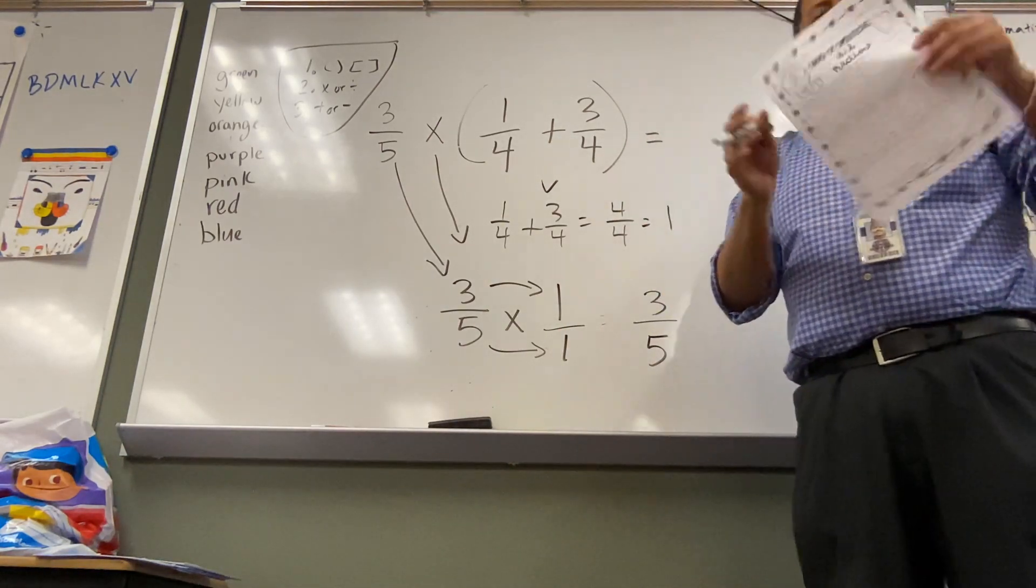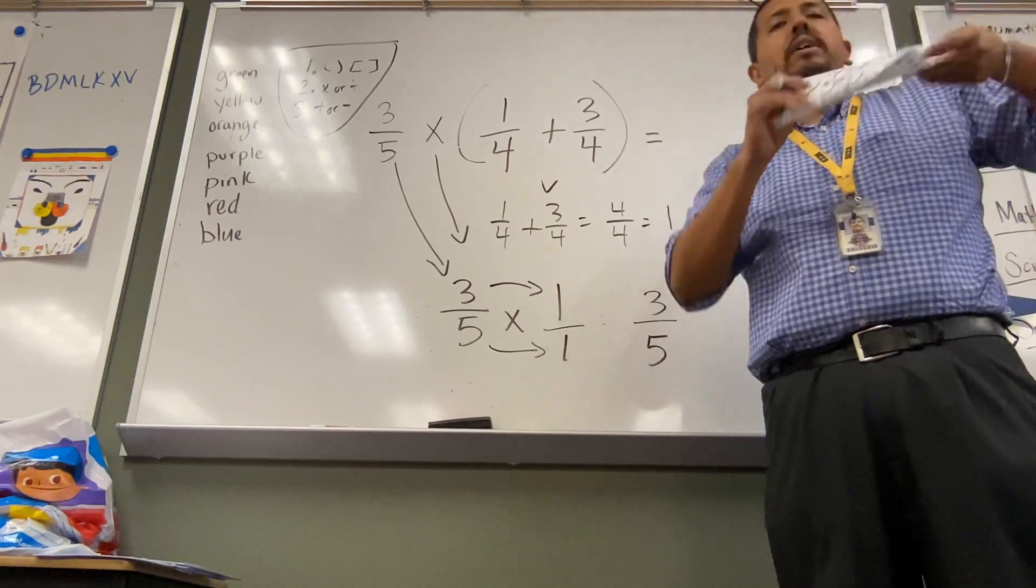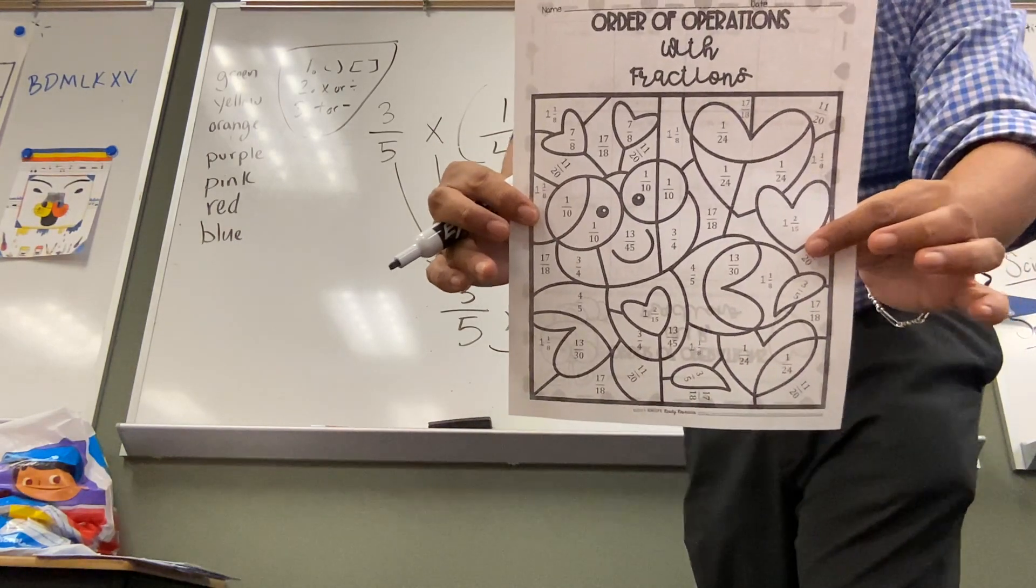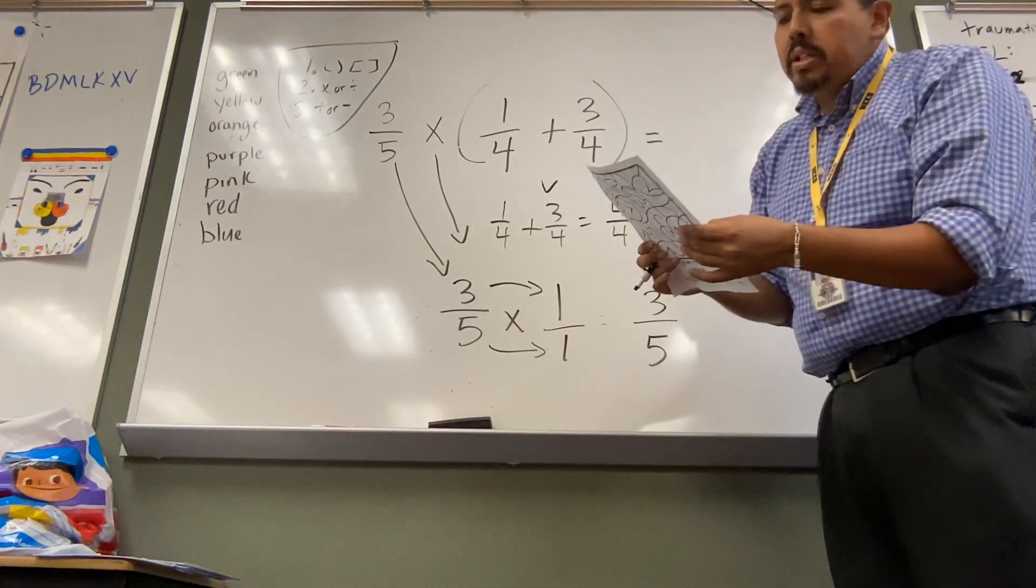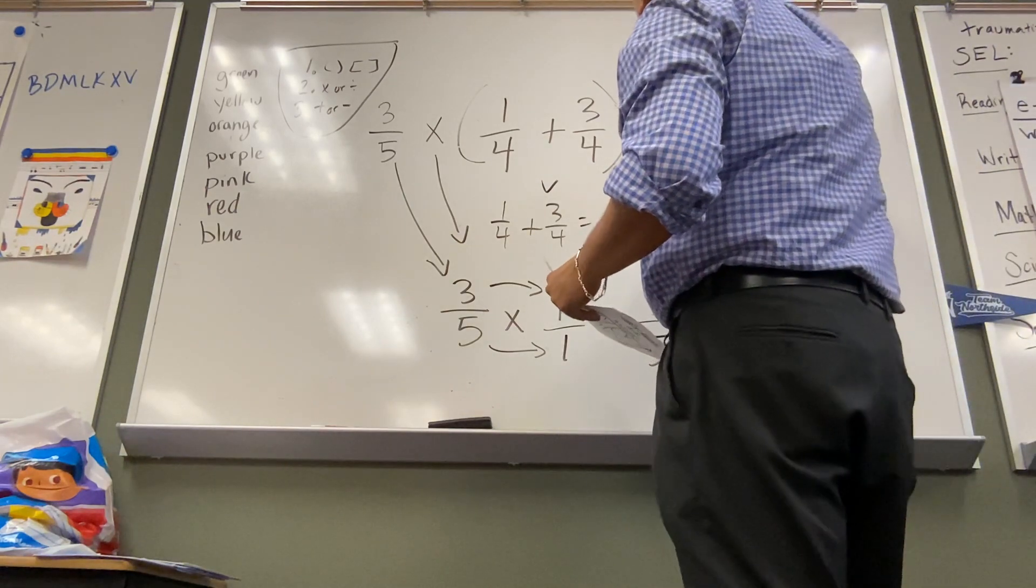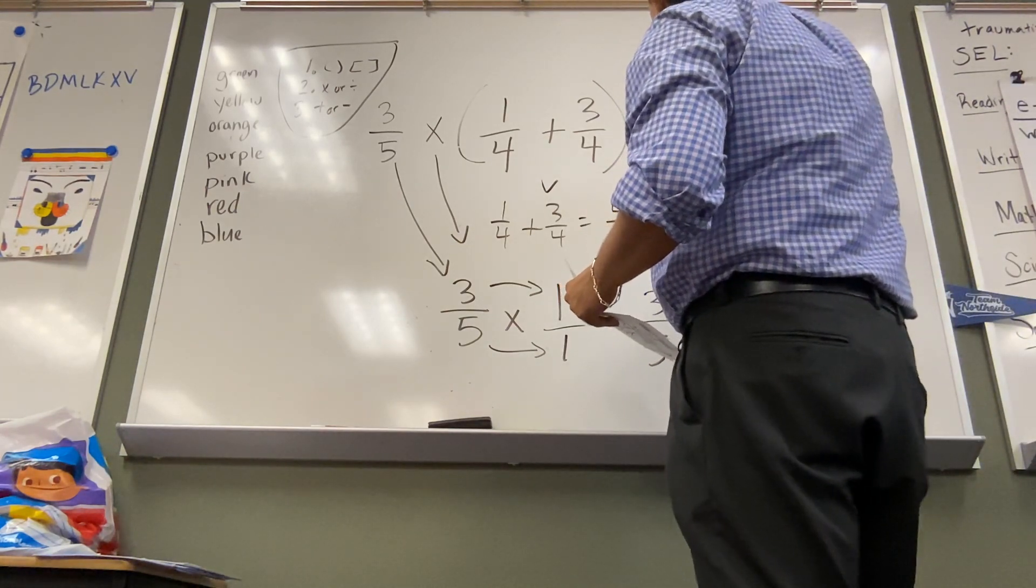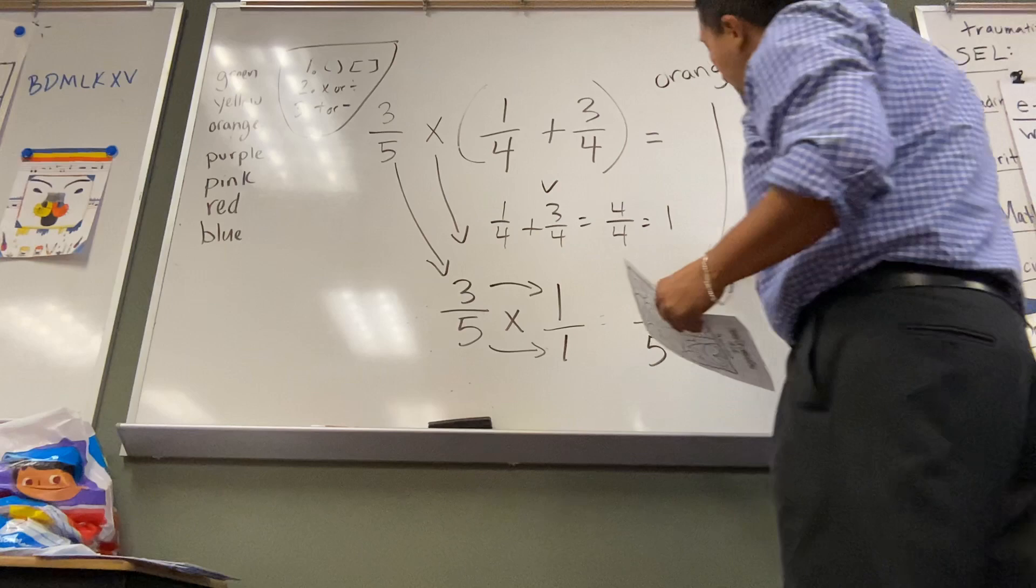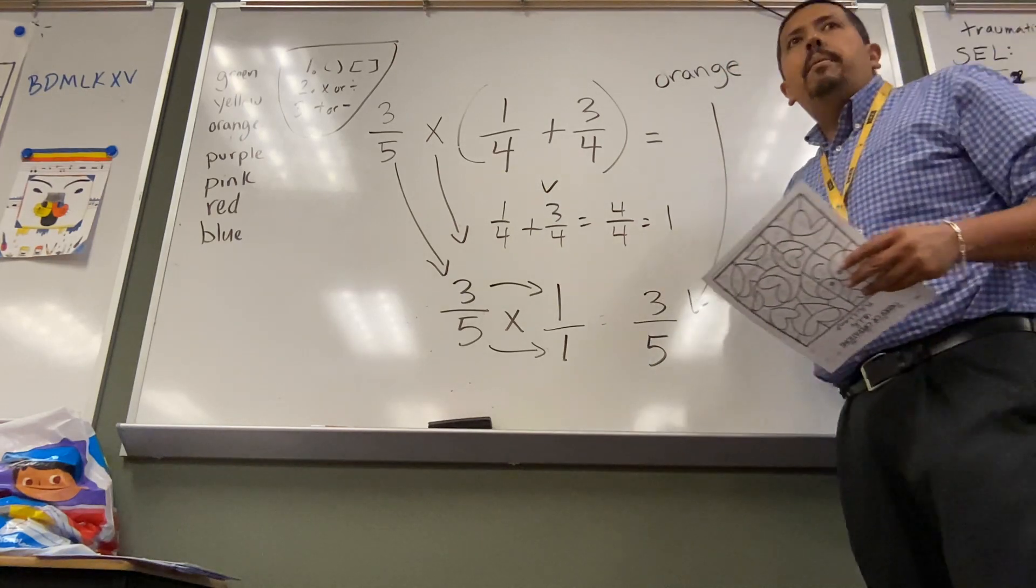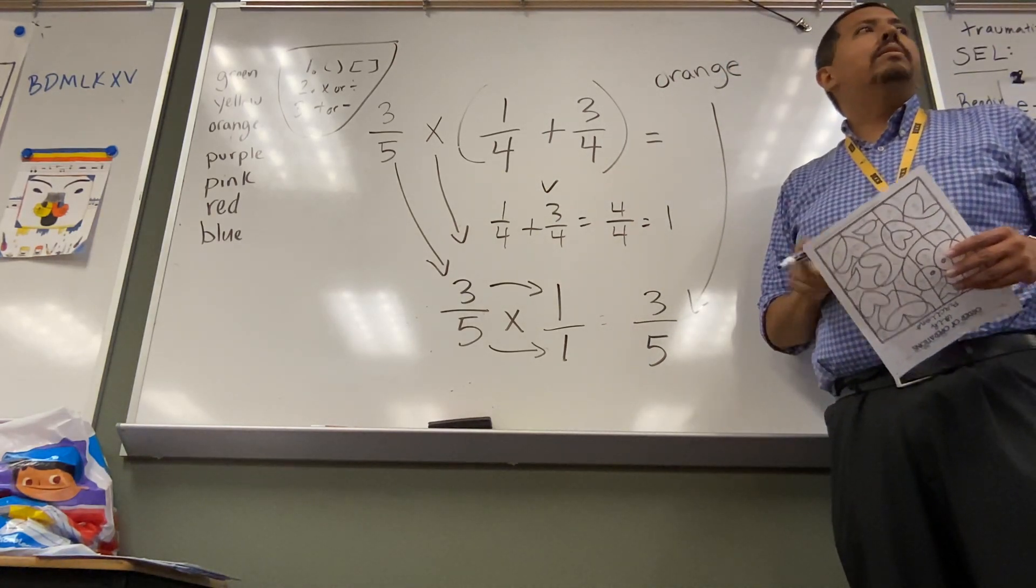So whichever one, any of the answers on the other side, if they have three-fifths, I'm going to color that one. It says to color it orange. So I'm going to color. I already gave you the first one. I'm going to color all my three-fifths. I'm going to color them orange. Does that make sense?